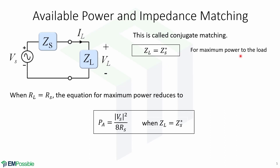In order to deliver maximum power to the load, the impedance of the load must equal the conjugate impedance of the source. This is called conjugate matching. When the resistance of the load equals the resistance of the source, the equation for maximum power reduces to Pa equals the magnitude of Vs squared over 8Rs, when the impedance of the load equals the conjugate of the impedance of the source.